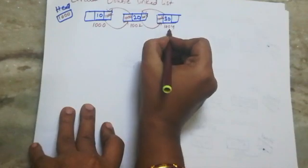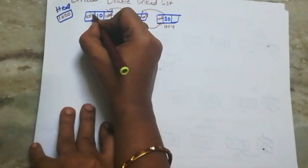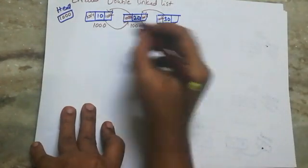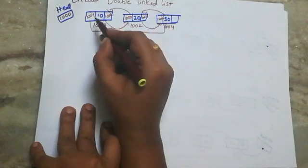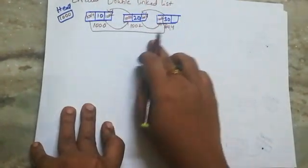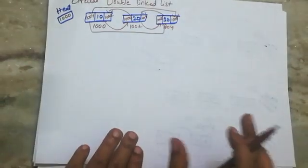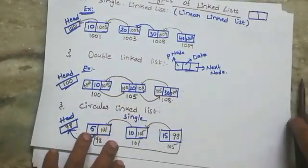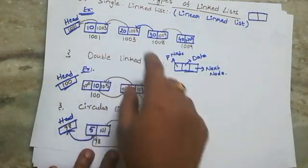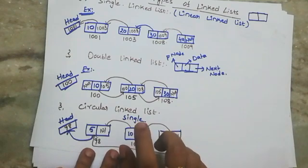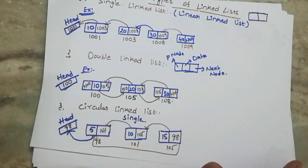In circular, we form circular notation. Node 30's address is 1004 — that 1004 is stored as node 10's previous node. So node 30 is node 10's previous node. Node 30's next node is node 10. This is a circular formation. To summarize: in single linked list, each node has only two parts; in double linked list, each node has three parts; and in circular double linked list, the same three parts form a circular link. These are the types of linked list.